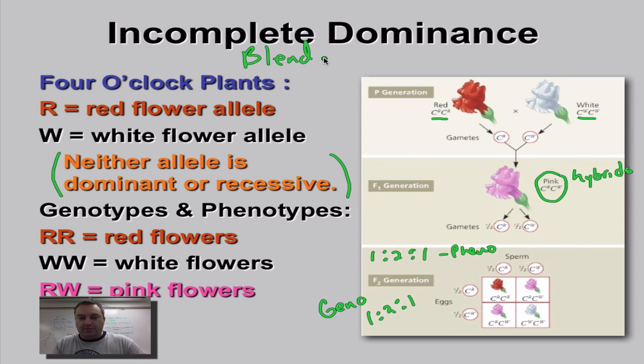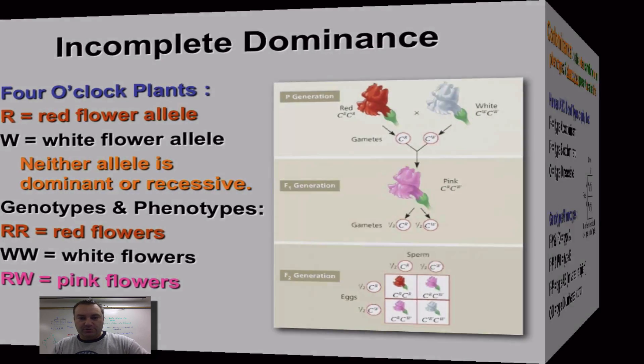Now, basically, you want to remember when it comes to incomplete dominance, the heterozygous ones will show a blend of the two traits. That's how you can tell it's not codominance because you have a blending of the traits during incomplete dominance. Let's move on to the next one, which is codominance.